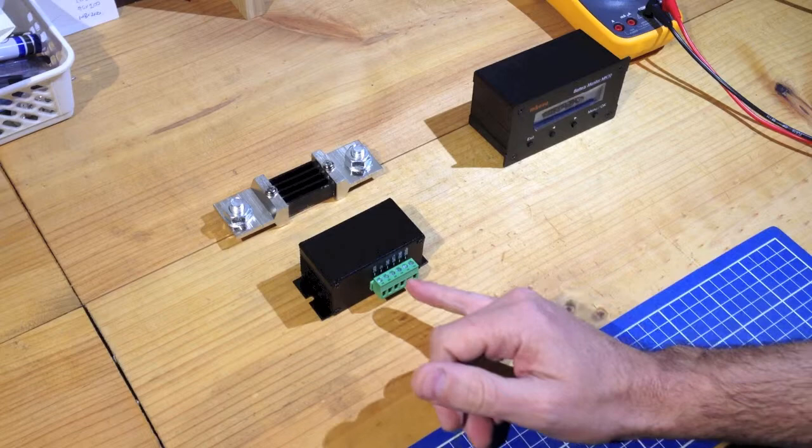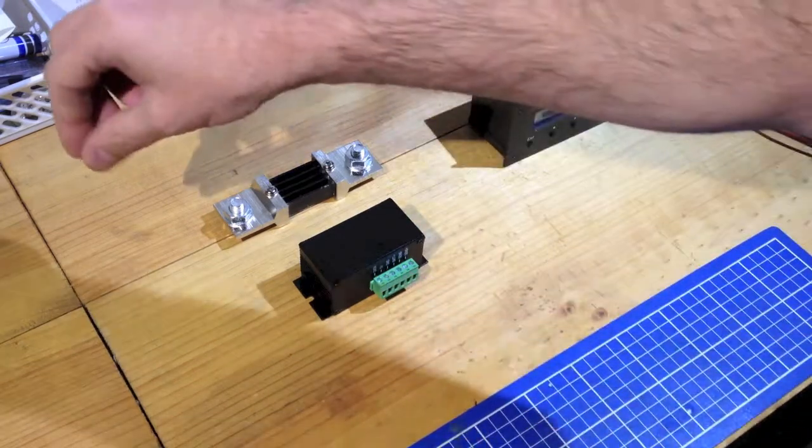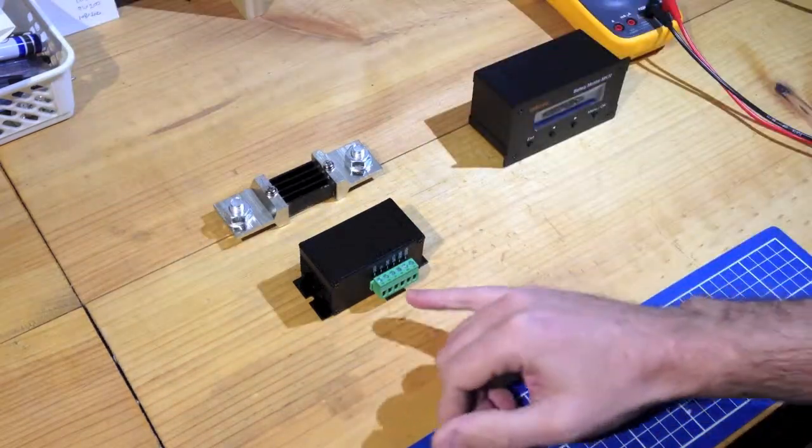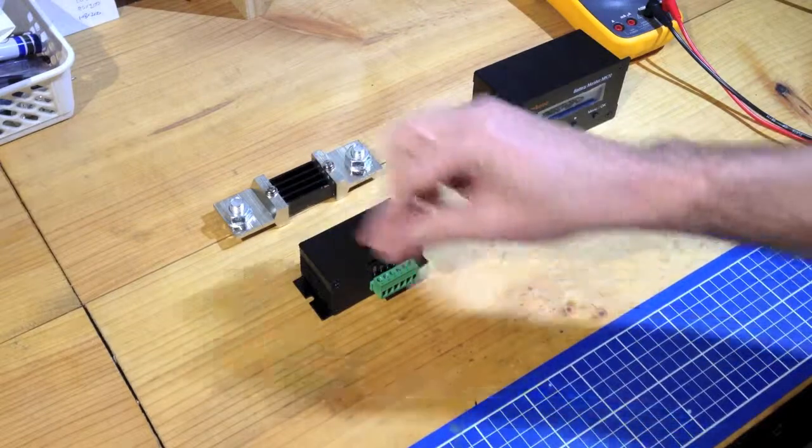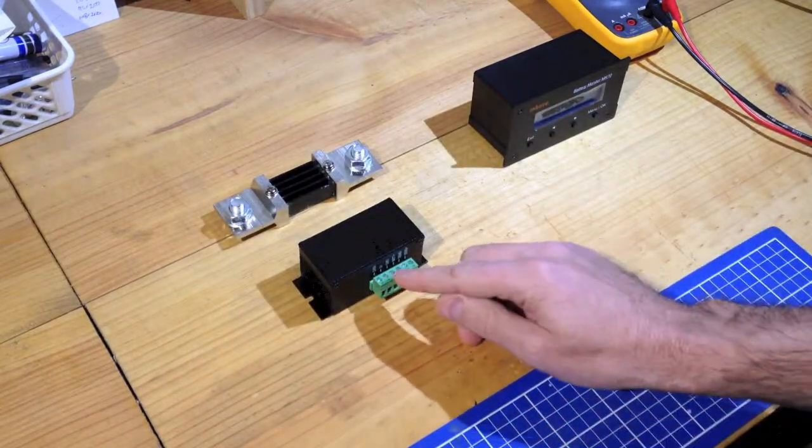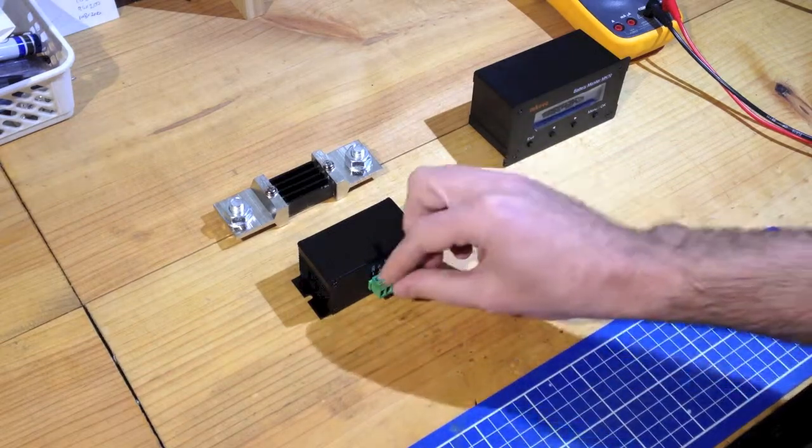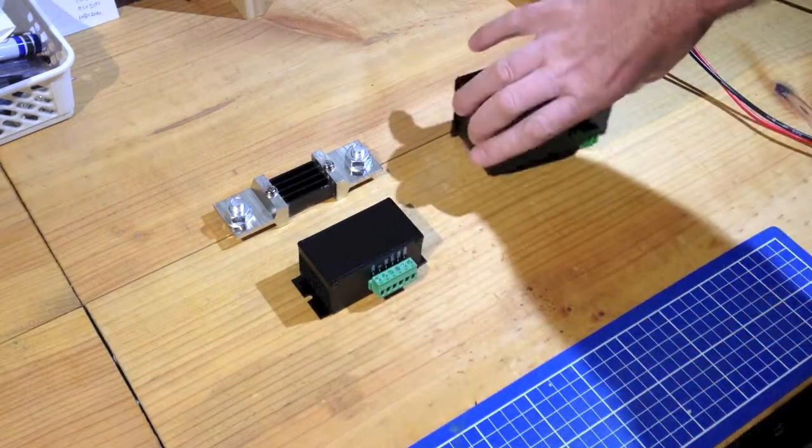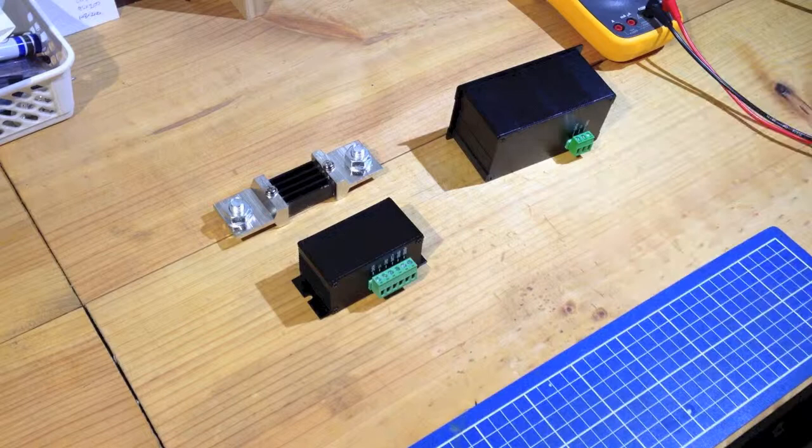And again, the rest are really just the same. Battery positive goes to the positive terminal of the battery. Ground, again, run a thin wire to the ground terminal of the battery. Five volts and data, well again, those three, we're going to run a cable from here and connect all the way over to the display unit at the other end.